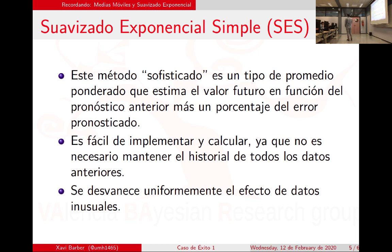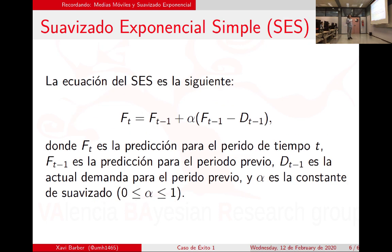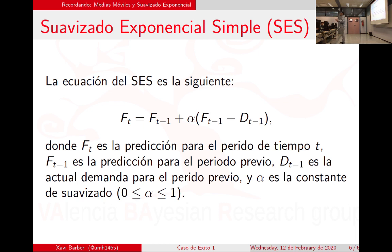¿Qué hace el SES? El SES muchas veces lo que daba era una predicción plana, lo único que hacía es incrementar el intervalo de confianza. El alfa del SES da la clave para entender las series temporales: yo nunca voy a predecir a ciegas, siempre miro mis valores anteriores. Por eso siempre voy a necesitar una cantidad razonable de valores. Con menos de 50, muchos métodos van a fallar.